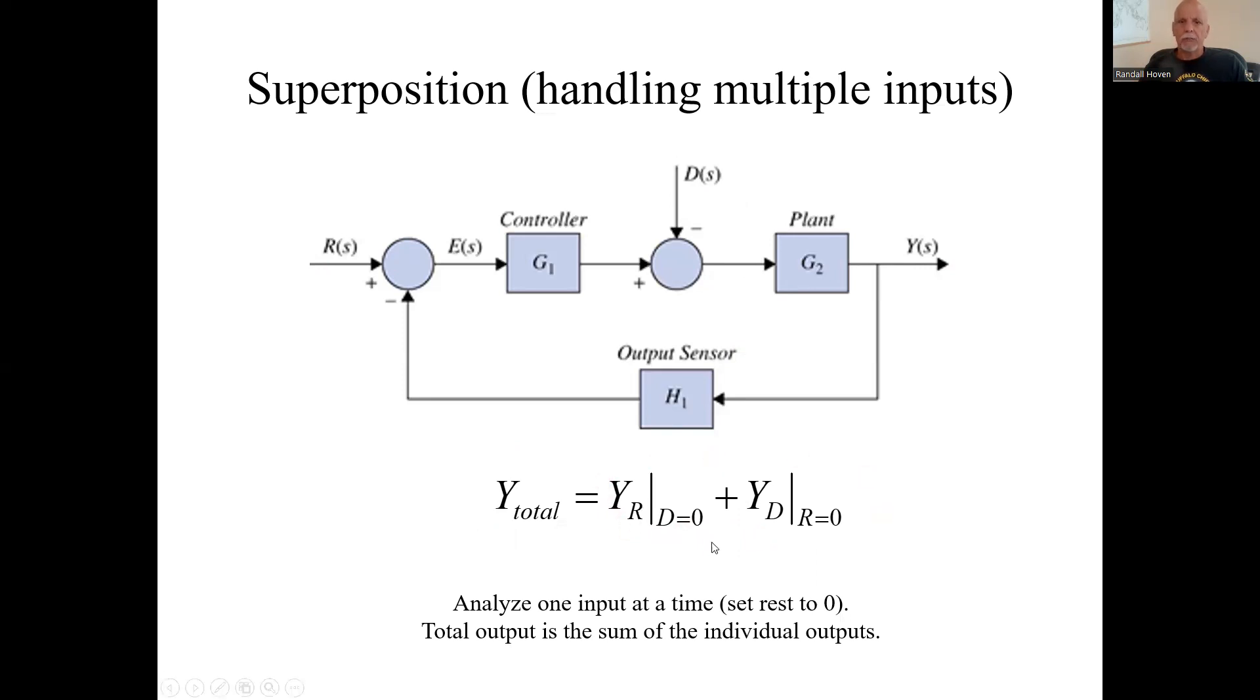Not just the two transfer functions, but the output you get when due to this signal R, I set the other signal to zero, and when I look at this guy, I set that R to zero. So you just set all other inputs to zero when you're concerned about one input, then the overall output is the sum of all of those.